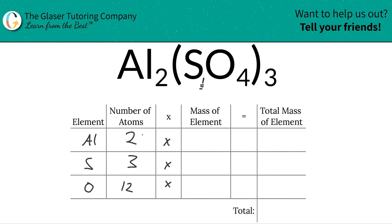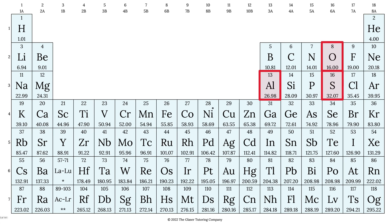Next, we're going to multiply those number of atoms by the mass of each particular element in the compound. This is where the periodic table comes into play. We scroll over and find the masses we need. These masses represent grams per mole if you're finding molar mass, or AMU if you're finding molecular mass. Aluminum is 26.98, sulfur is 32.07, and oxygen is about 16.